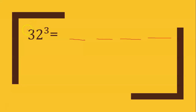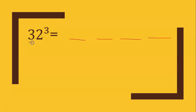The first number is 3 cubed. Now, 1 to 9 is the cube. 3 cubed is 3 × 3 × 3, that is 27. Now we have 27 here.